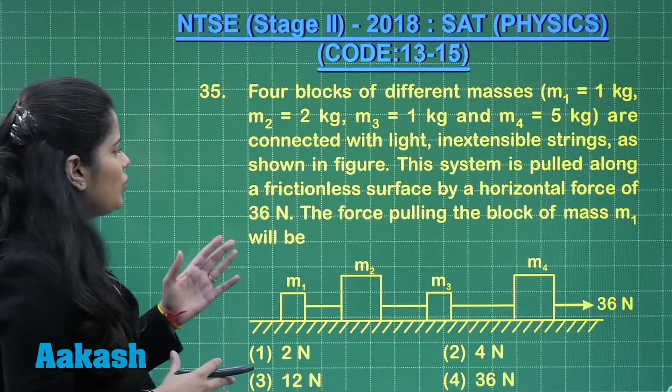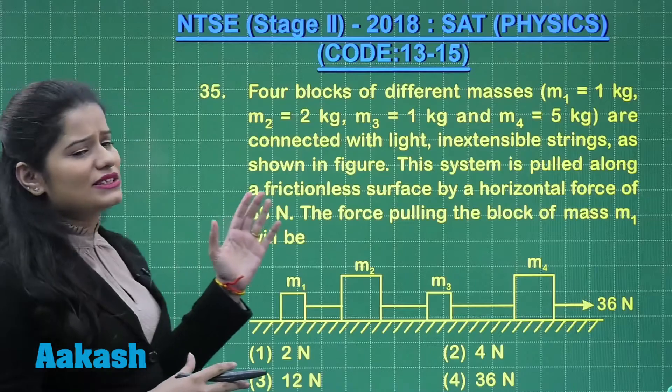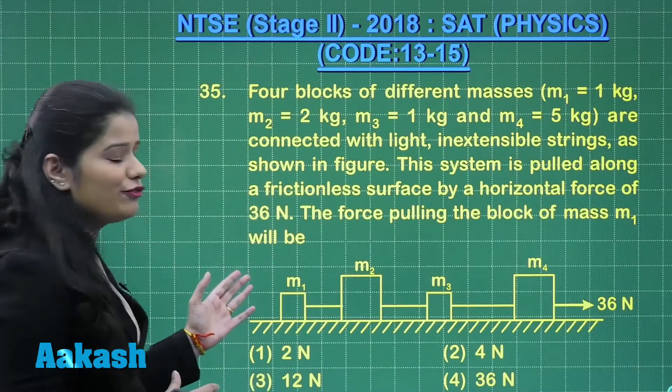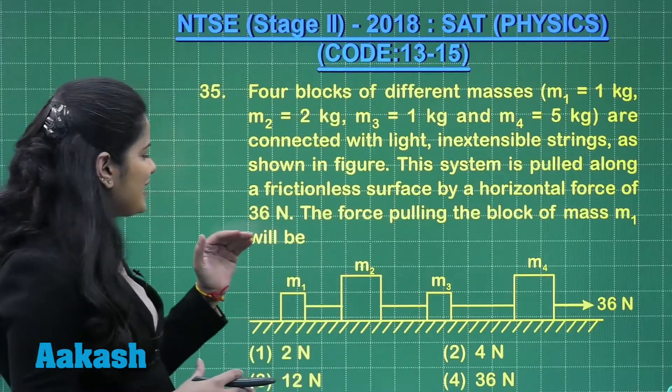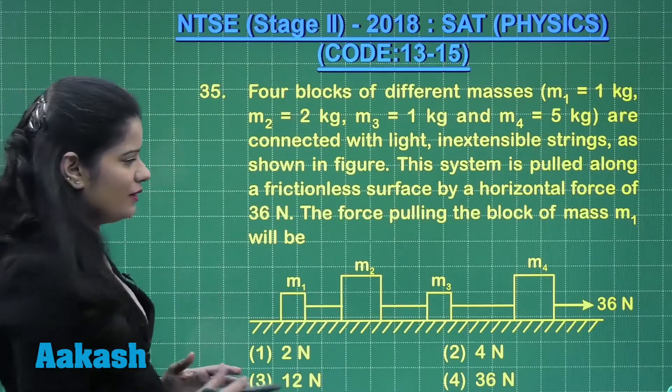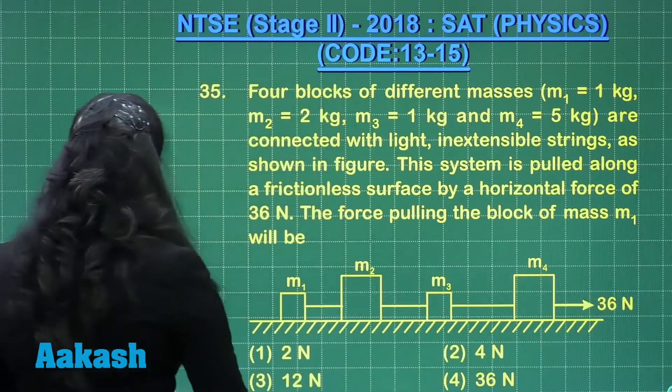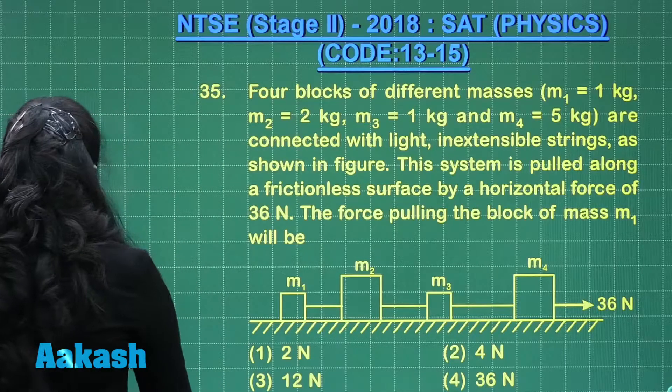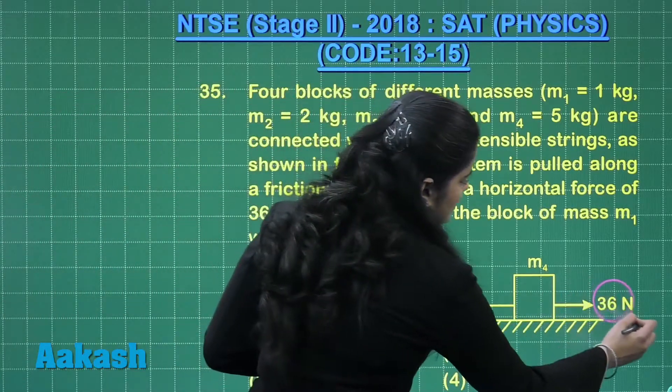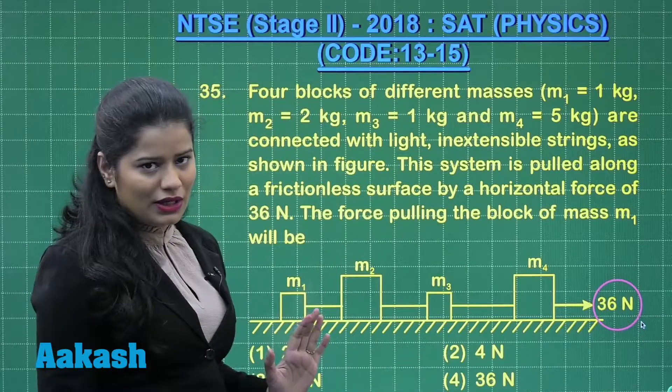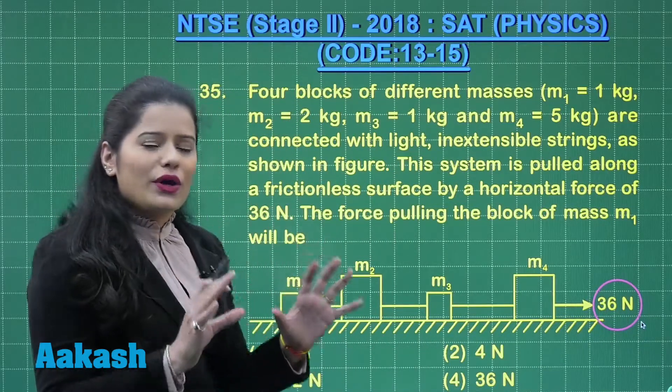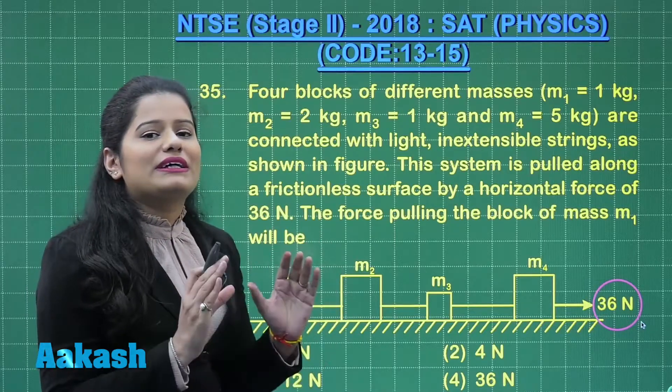This system is pulled along a frictionless surface by a horizontal force of 36 Newton. The force pulling the block of mass M1 will be, see here this is the force that is the external force which is given to us and this force is pulling all these blocks. This is a question which is based on connected motion.